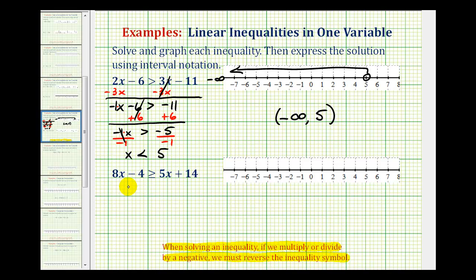Looking at our second example, again, we have variable terms on both sides of the inequality. So we need to either subtract 5x on both sides, or subtract 8x on both sides. If we prefer to have the variable on the left side, we would have to subtract 5x on both sides.